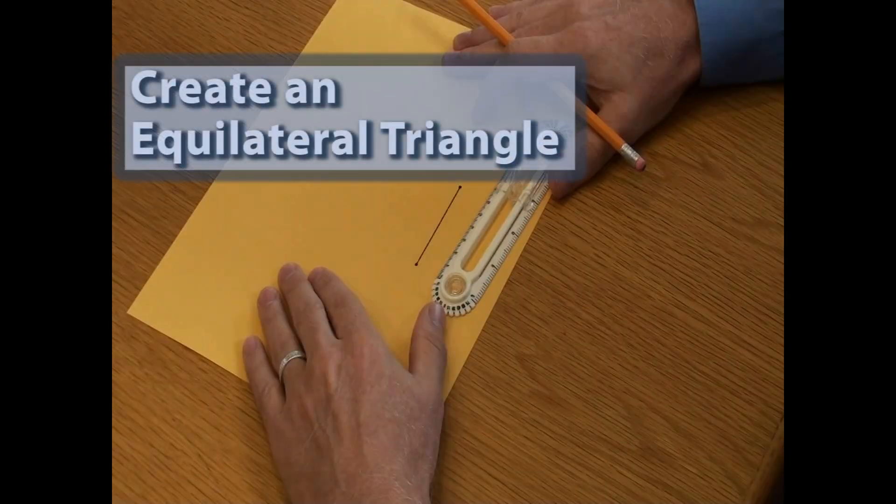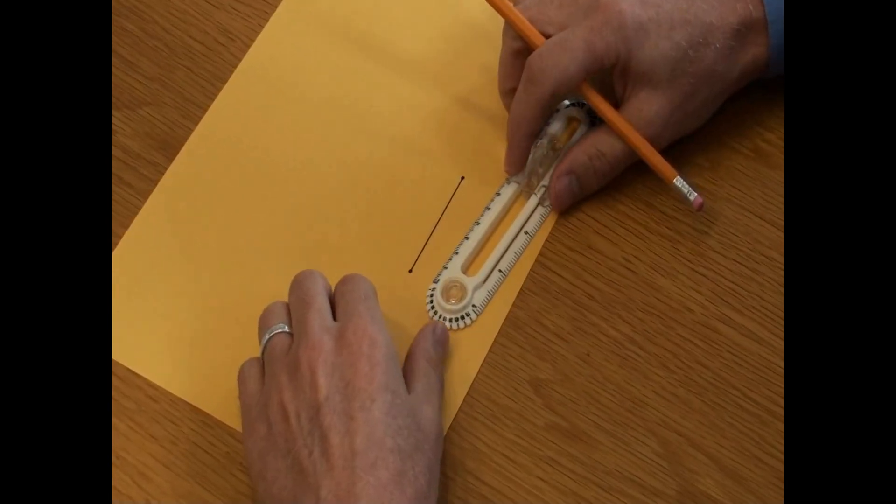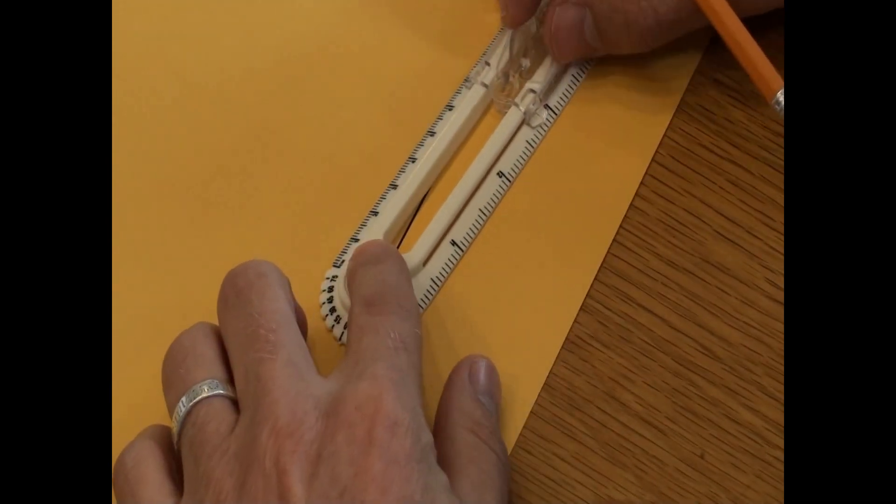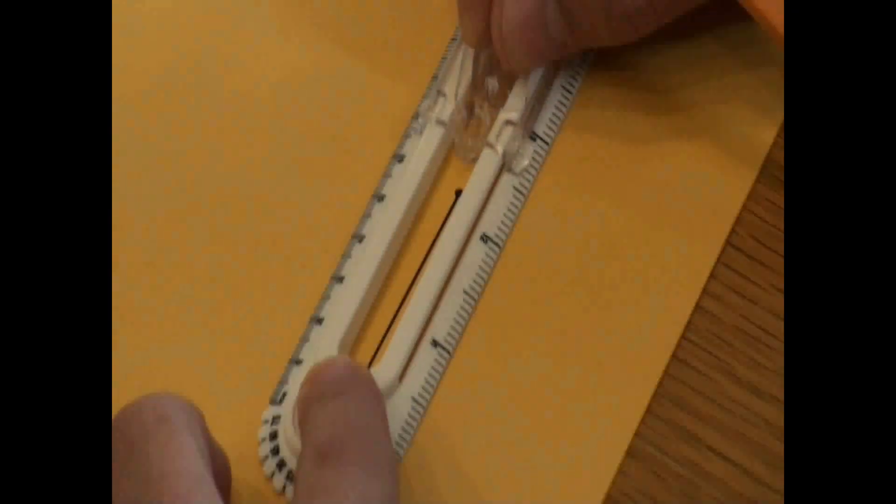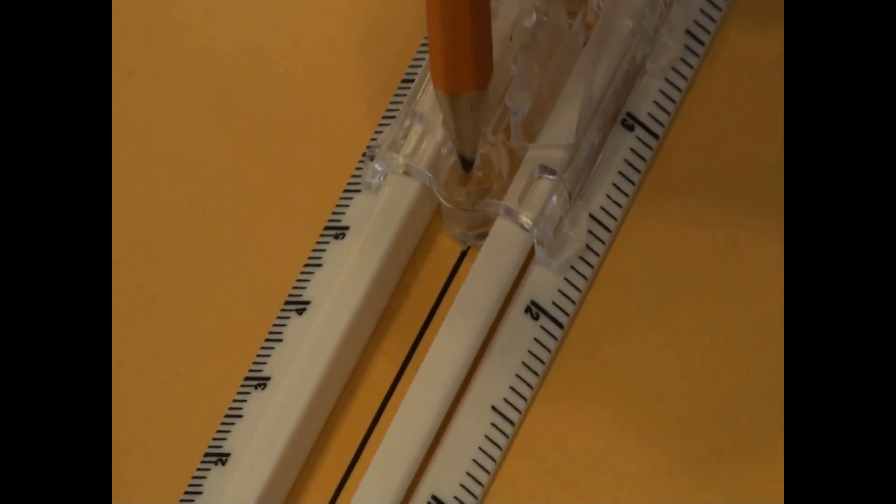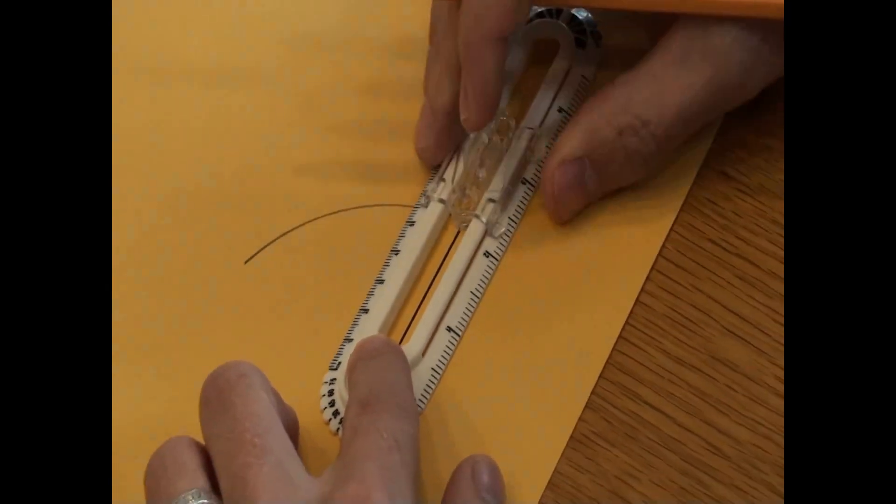Now, we are going to use a compass to create an equilateral triangle with all three sides equal in length to the original line segment. Place the pivot point on one endpoint of the line segment. Move the slide until the point on the slide is on the other endpoint. Strike an arc from that endpoint above the line segment.